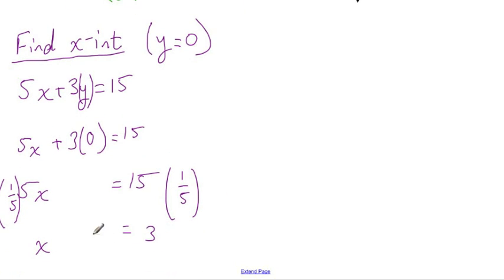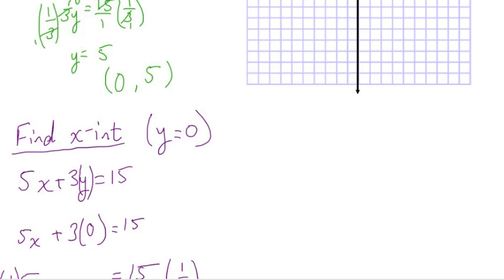And so, I can now put these two together into a point. The x-coordinate is 3 and the y-coordinate is 0. So my other intercept is at the point 3, 0.